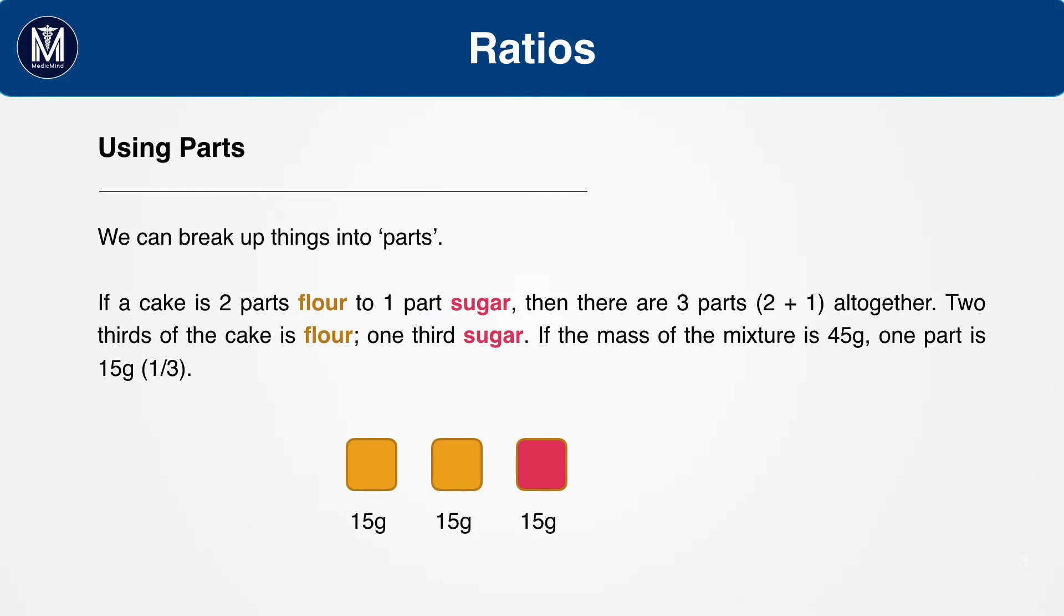We can break things into parts. If a cake is two parts flour to one part sugar, then there are three parts altogether. Two thirds of the cake is flour, one third is sugar.